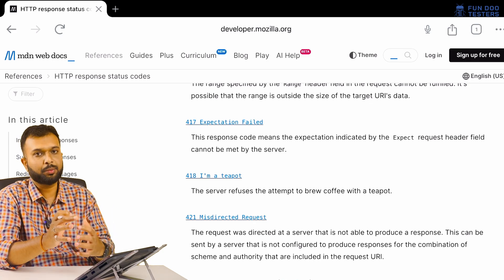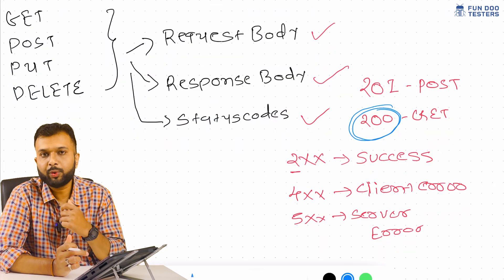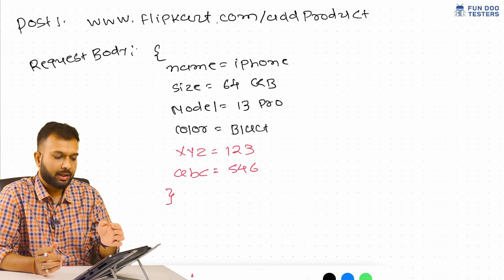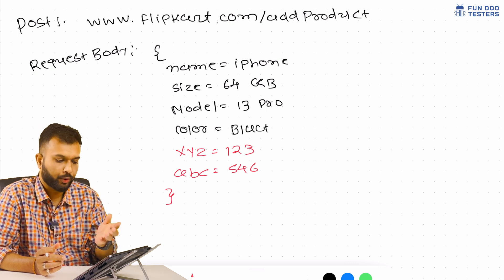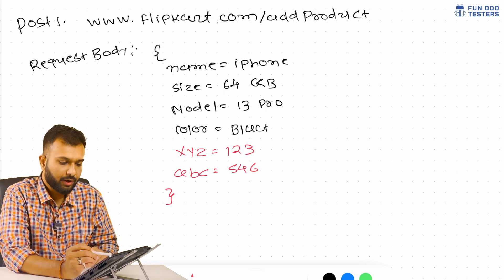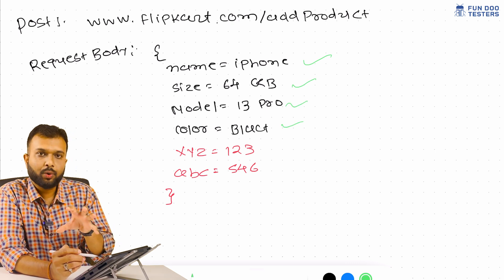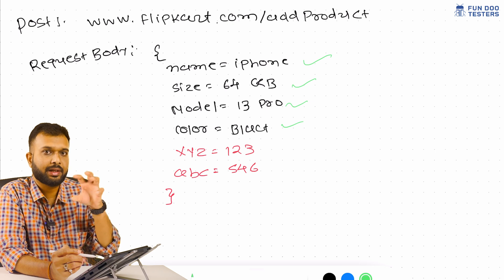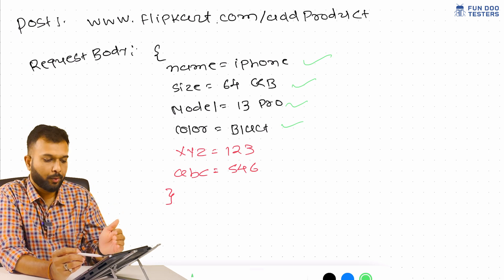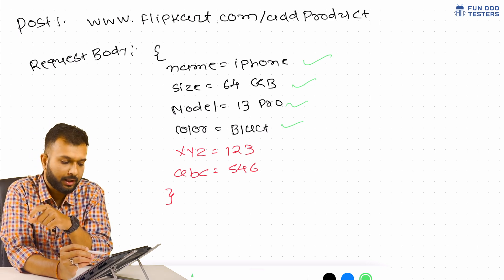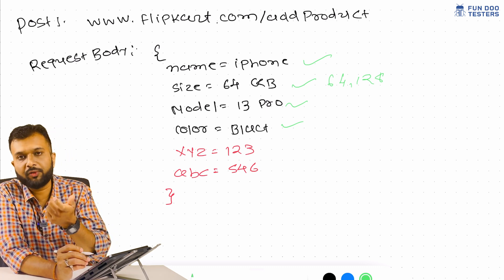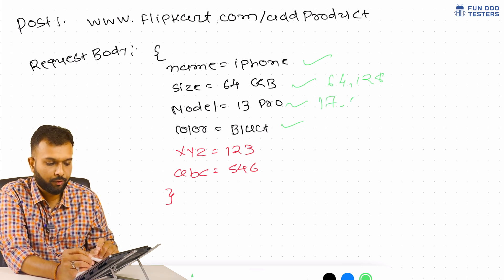Next, let's discuss testing the request body. During the POST request discussion, we covered an 'add to cart' example where we passed a request body with properties like product name, product size, model, and color. These are predefined properties stored in a database. For example, the name has to be iPhone, size will be variants like 64 GB or 128 GB — these are predefined data values.